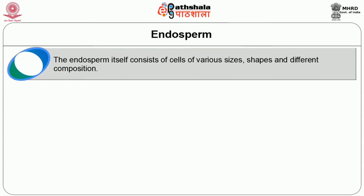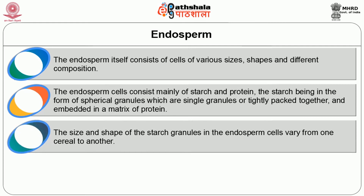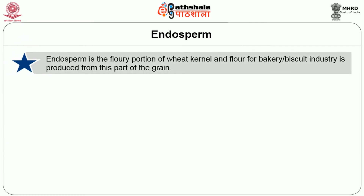Due to these reasons it is not desirable to have bran contamination in the flour more than what is absolutely unavoidable in good milling practices. The endosperm itself consists of cells of various sizes, shapes and different composition. The endosperm cells consist mainly of starch and protein, the starch being in the form of spherical granules which are single granules or tightly packed together and embedded in a matrix of protein. The size and shape of the starch granules in the endosperm cells vary from one cereal to another. Starchy endosperm accounts for about 80 to 85 percent of the grain. Endosperm is the floury portion of the wheat kernel and flour for bakery and biscuit industry is produced from this part of the wheat grain.